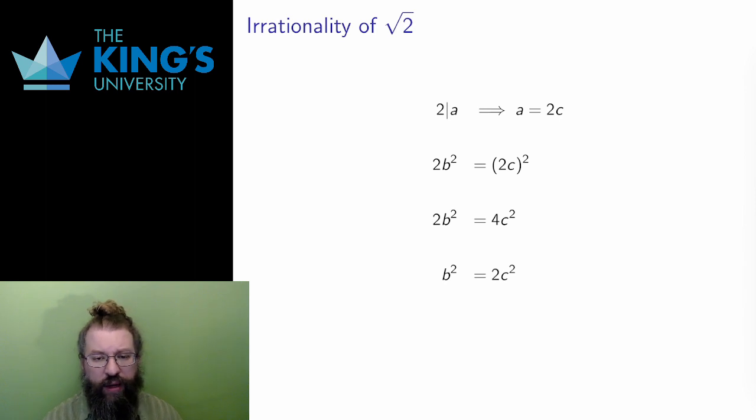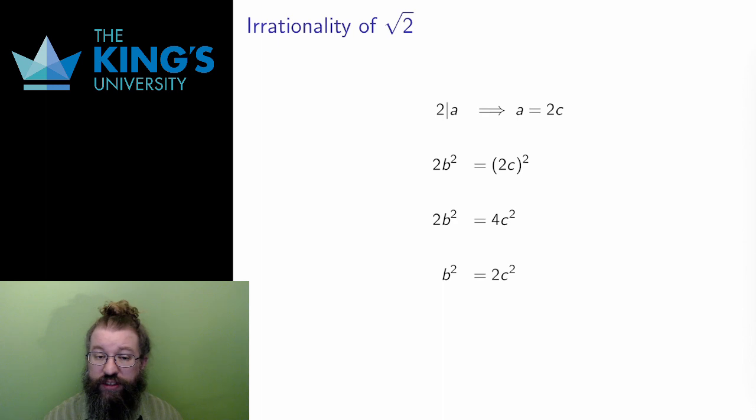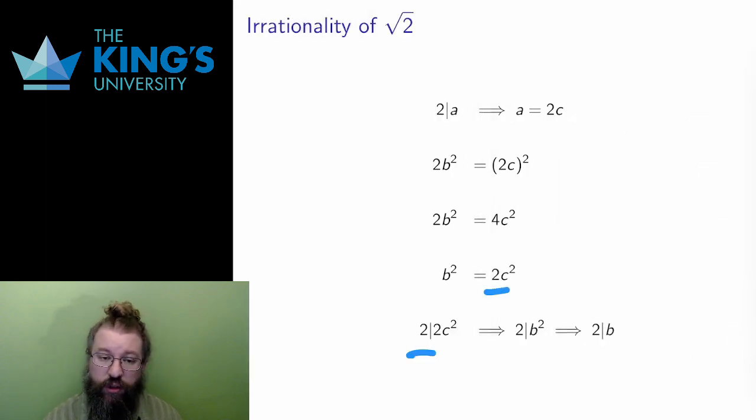And now I have a 2 on the right, and I'm going to repeat the argument from the previous slide. 2 divides the right, so the right is even, so the left is even, so 2 divides b squared, so 2 divides b.